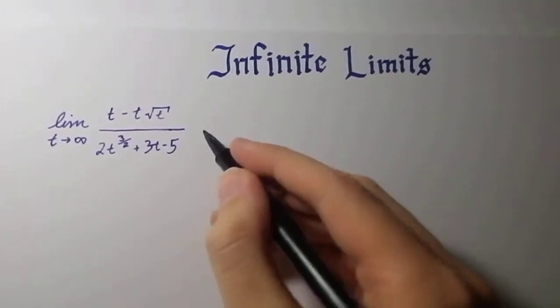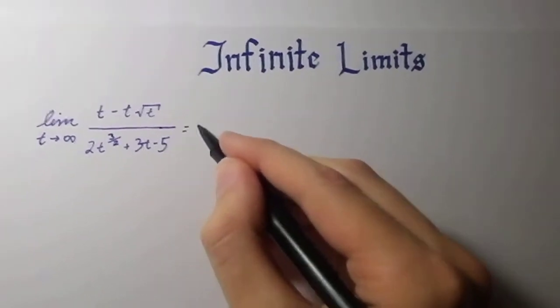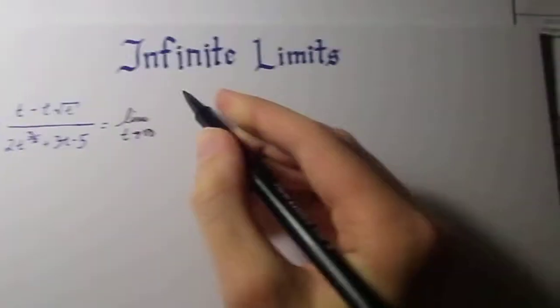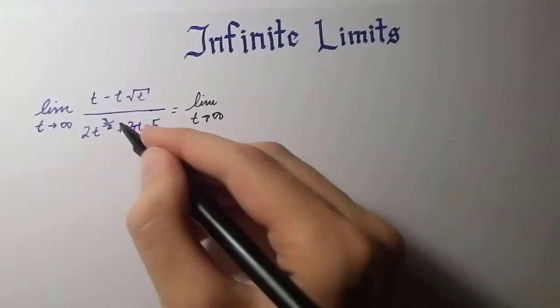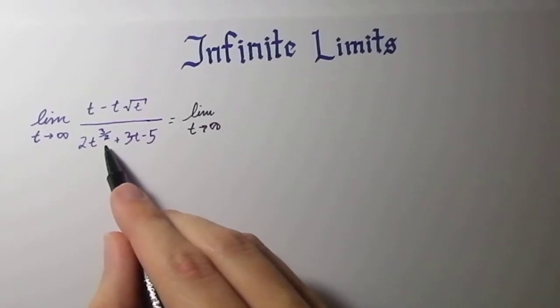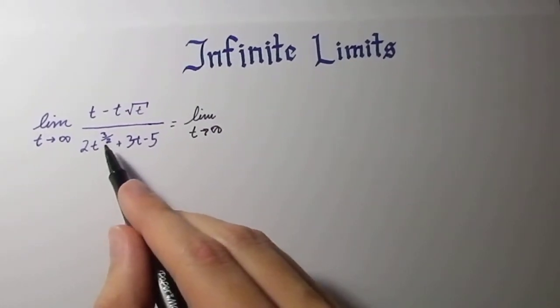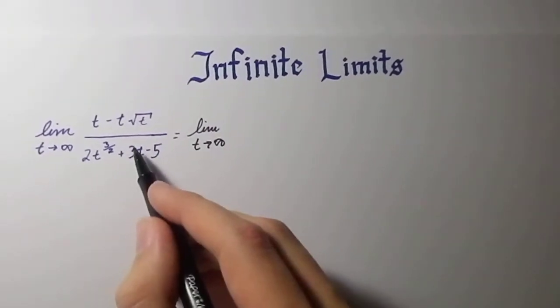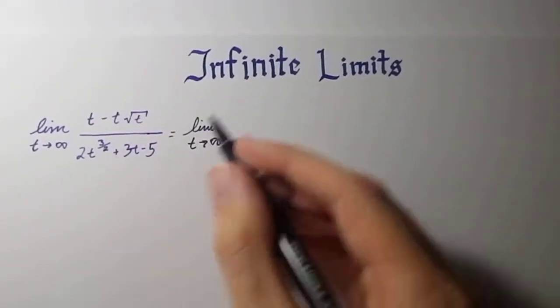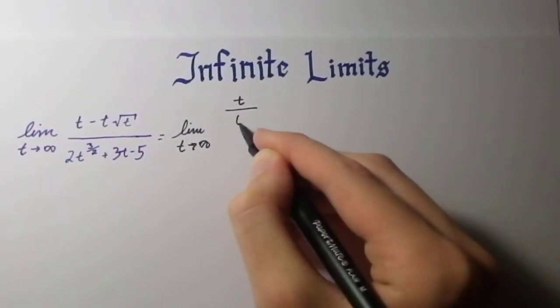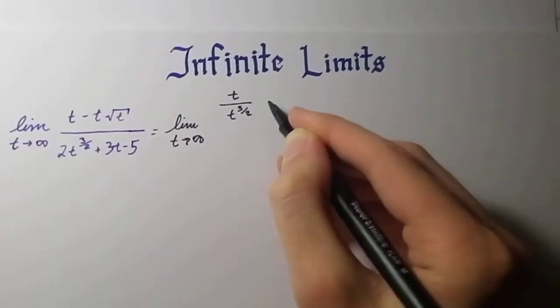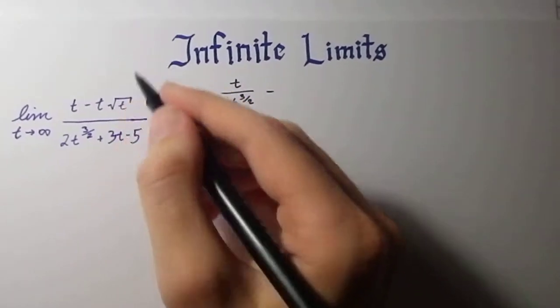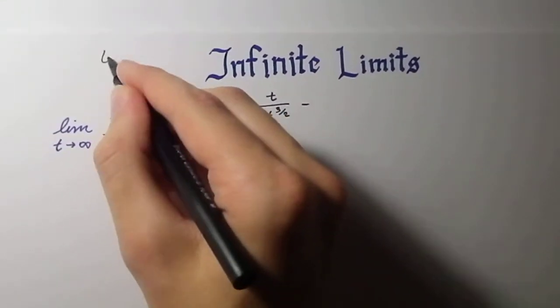So this becomes the limit as t approaches infinity, and of course it's going to be 3 halves because 3 halves is 1.5, and that's the highest of all of everything found in the denominator. So you're going to have t over t to the 3 halves minus, now t times square root of t.